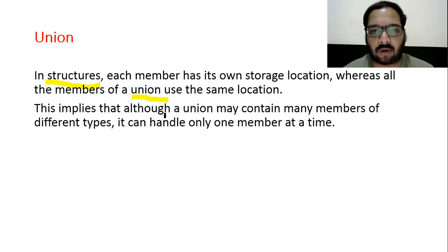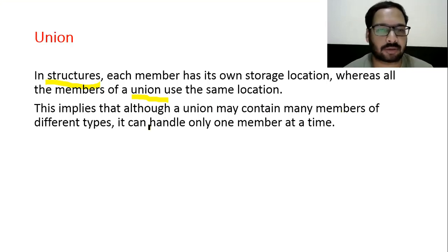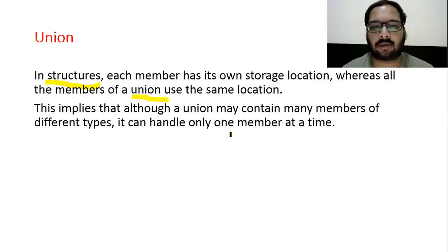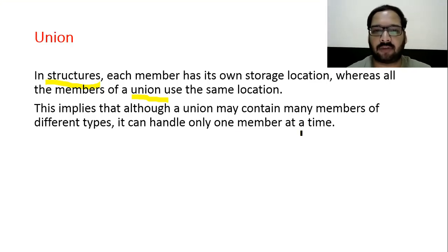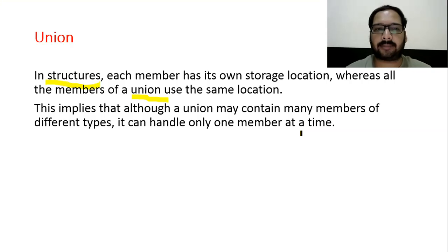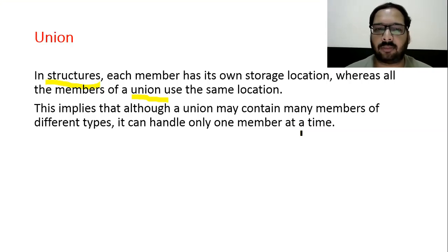Although a union may contain many members of different types, it can handle only one member at a time. If you need to declare many variables but use only one at a time to save memory, you create a union.